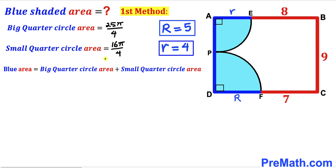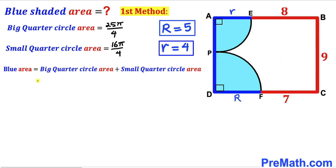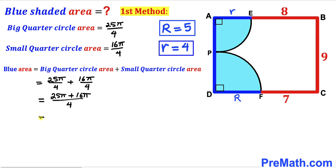Recalling that the blue shaded area equals the big quarter circle area plus the small quarter circle area, we substitute: 25π/4 plus 16π/4. They share a common denominator, so adding gives 41π/4 square units — the area of the blue shaded region.